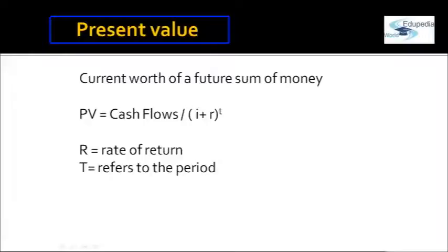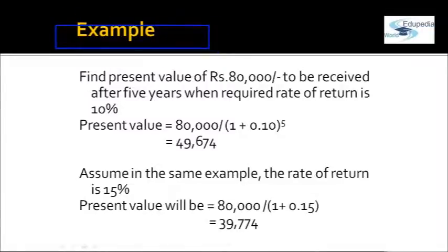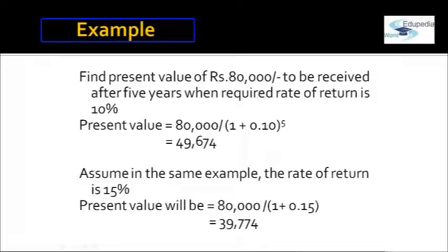For example, to compute the present value of Rs. 80,000 expected to be received after five years, when the required rate of return is 10%, the present value is 80,000 divided by (1 + 10%) to the power 5, which equals 49,674. So 49,674 rupees today is equal in value to 80,000 after five years.